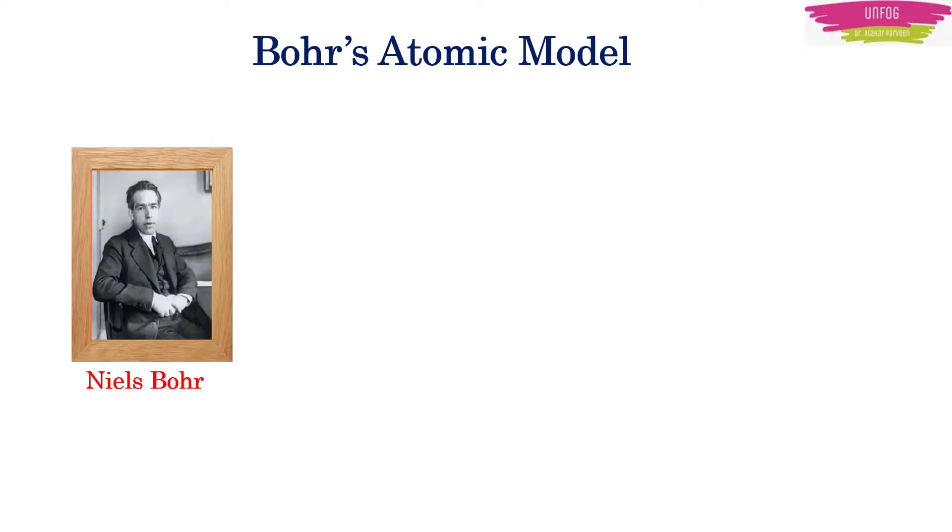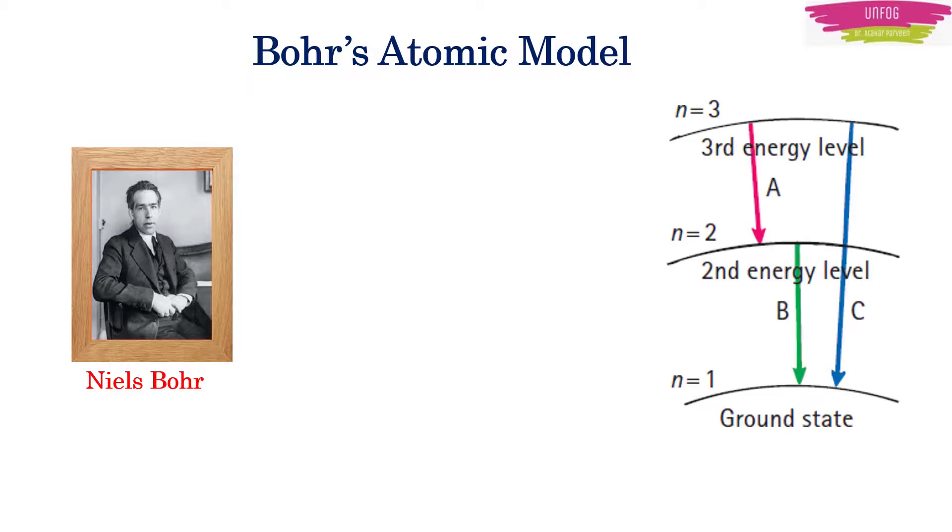Niels Bohr, a student of Rutherford, solved this mystery with his atomic model in 1913. According to this model, the electron revolves around the nucleus in definite orbits without losing energy.